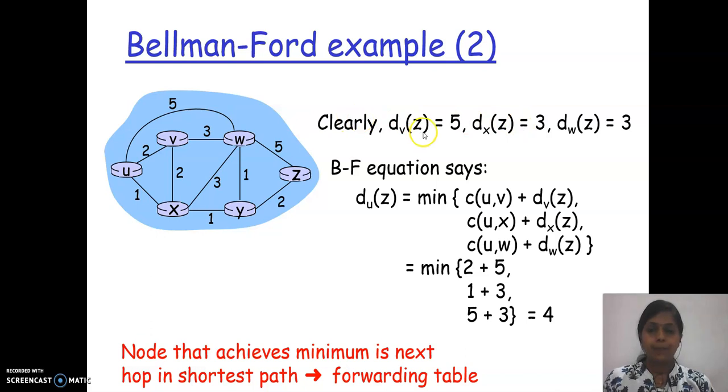Now with this information, from u to z the least cost path is: if I travel via x it is 1 plus 3, which is 4. If I travel via v, it will come around 2 plus 5, which is 7. If I travel via w, it will come around 5 plus 3, which is 8. That is given here. Among these, which is the least one value? Via x, which is 4, is the least cost.